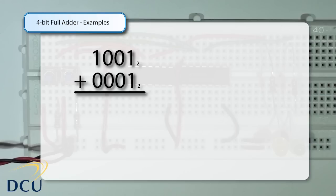The number below that we want to add to it is 0001 to the base 2, which is also 1 in decimal. So the addition that we're trying to carry out is 9 plus 1, so the result should be 10.